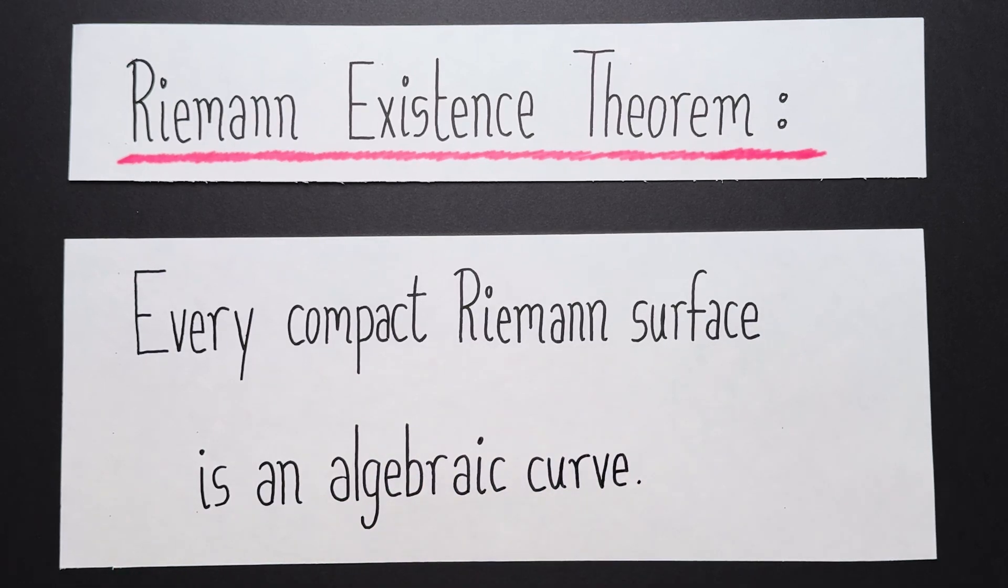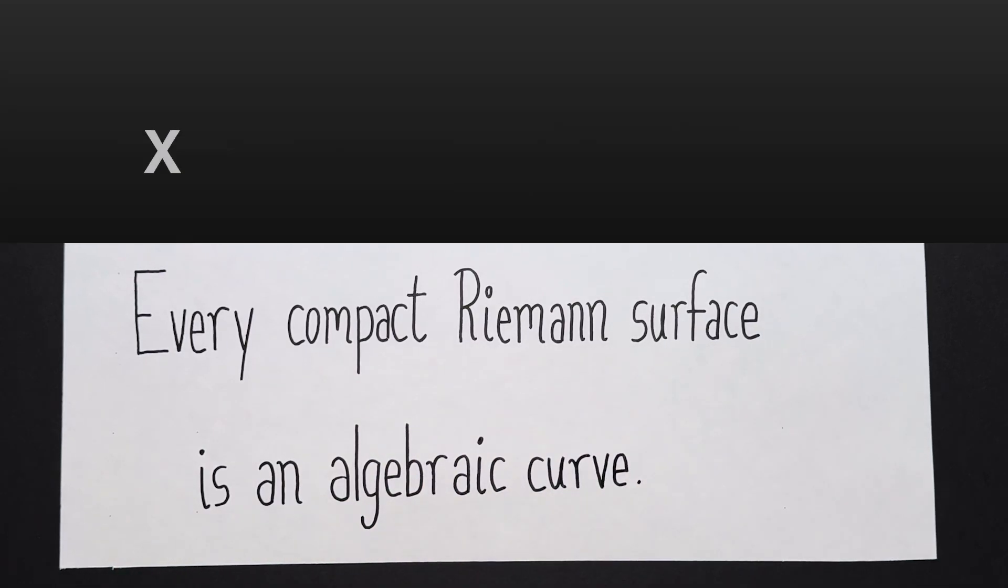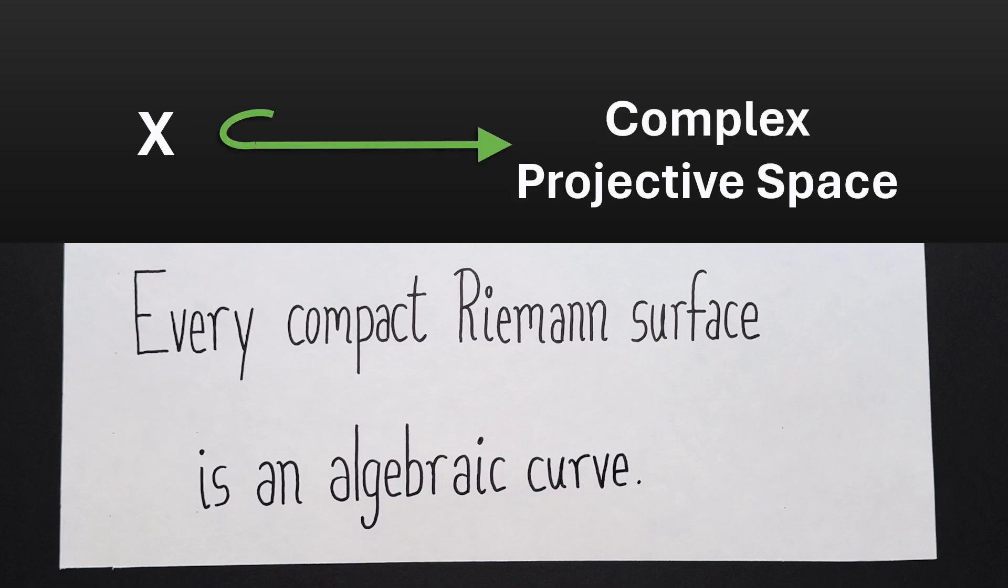That is, given any compact Riemann surface x, you can map it isomorphically to the zero set of polynomial equations. To be precise, there is a smooth embedding of x into complex projective space, whatever that is, which maps f isomorphically to the zero set of polynomial equations.